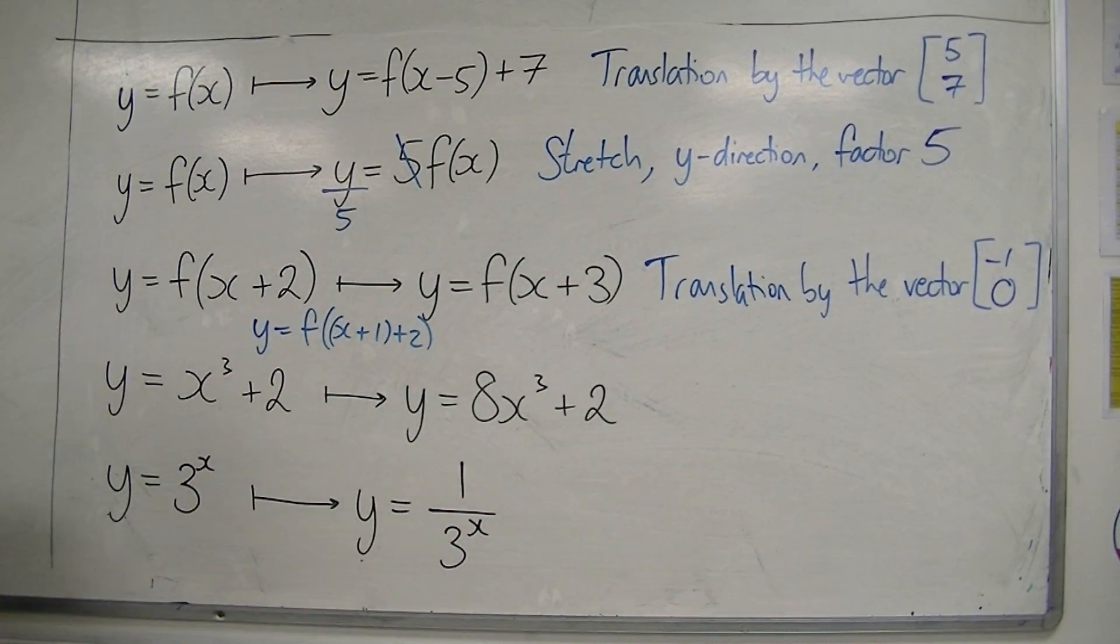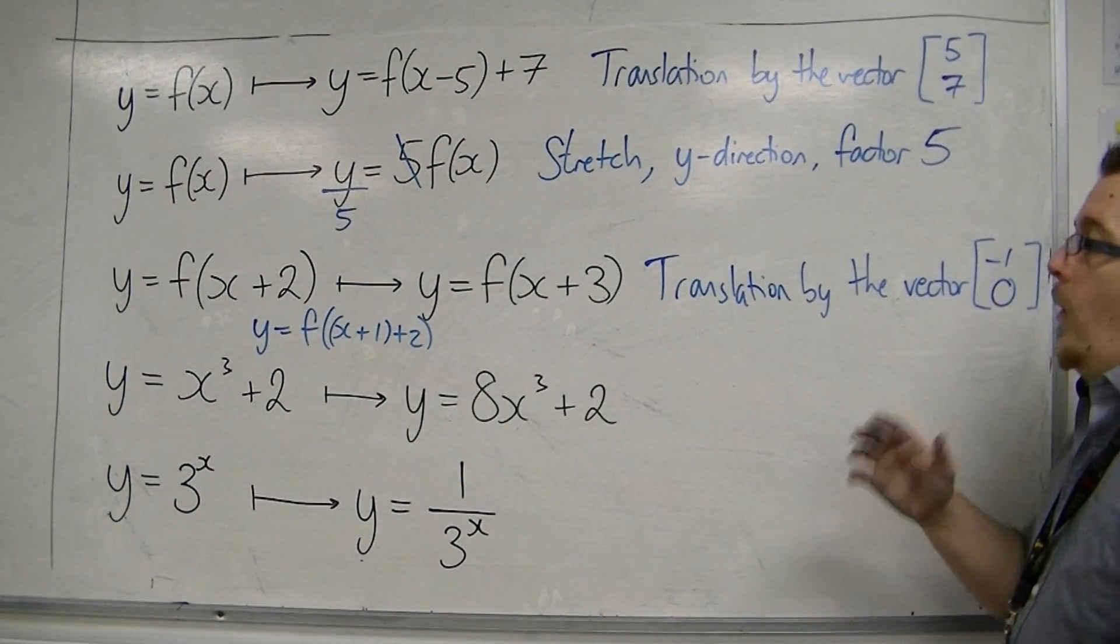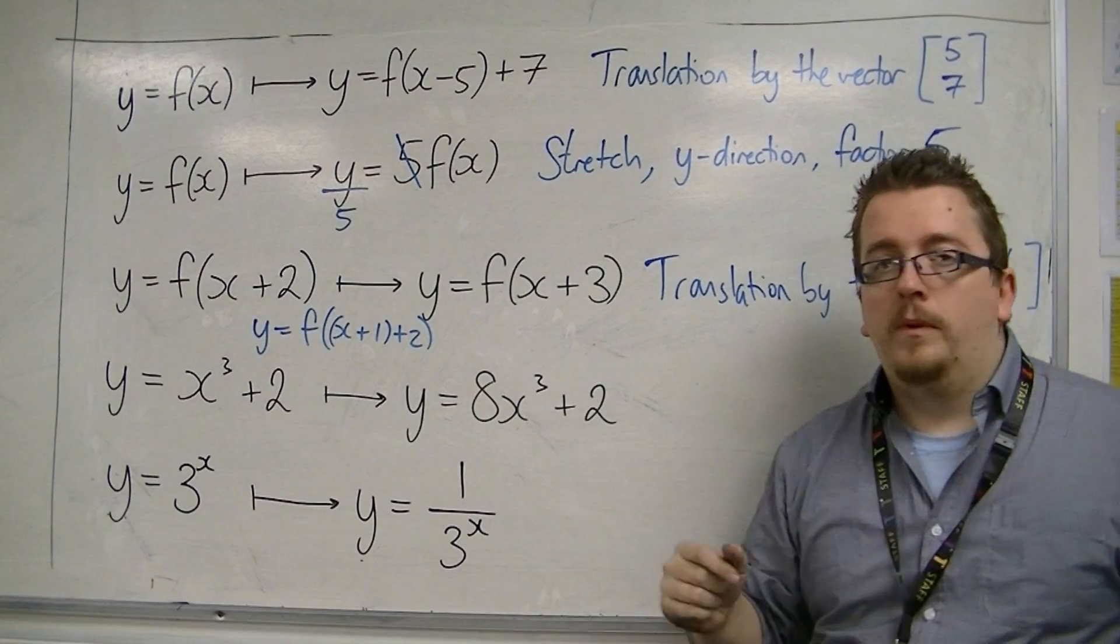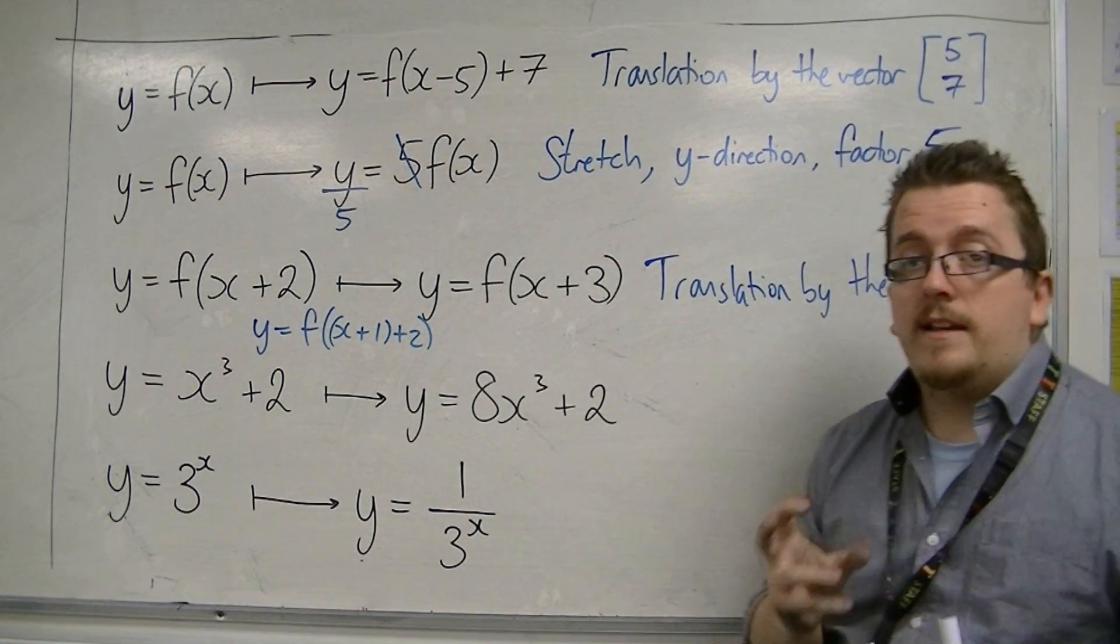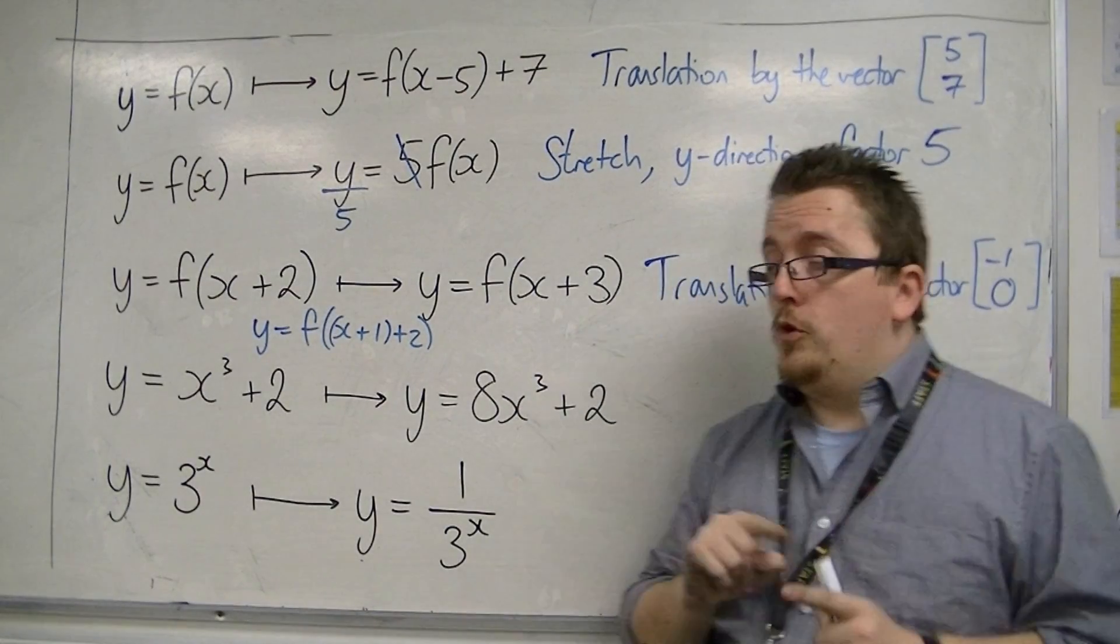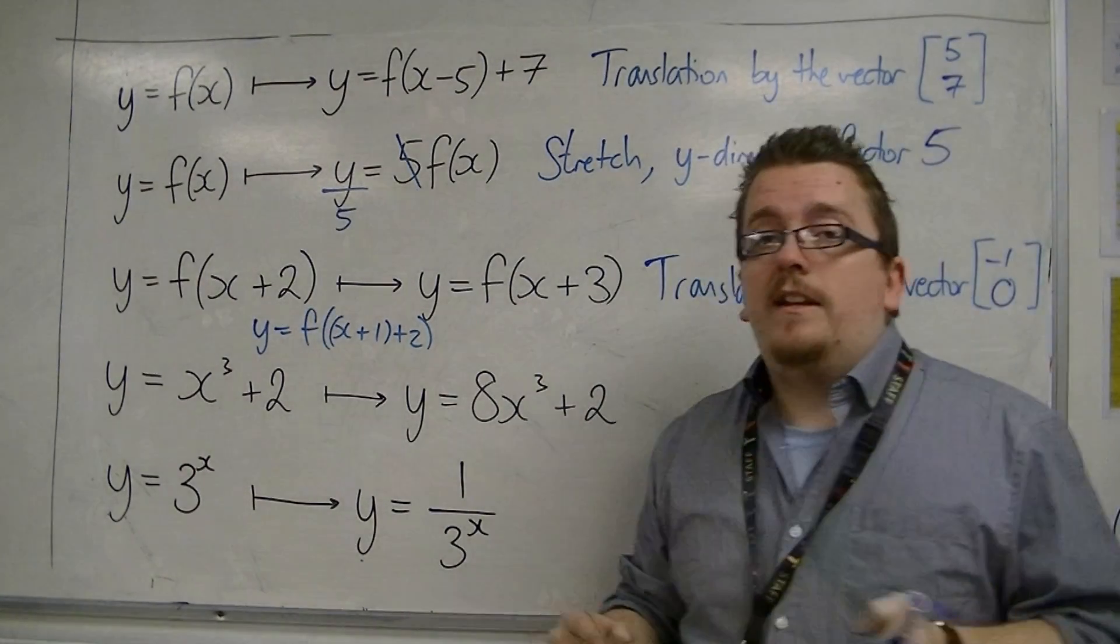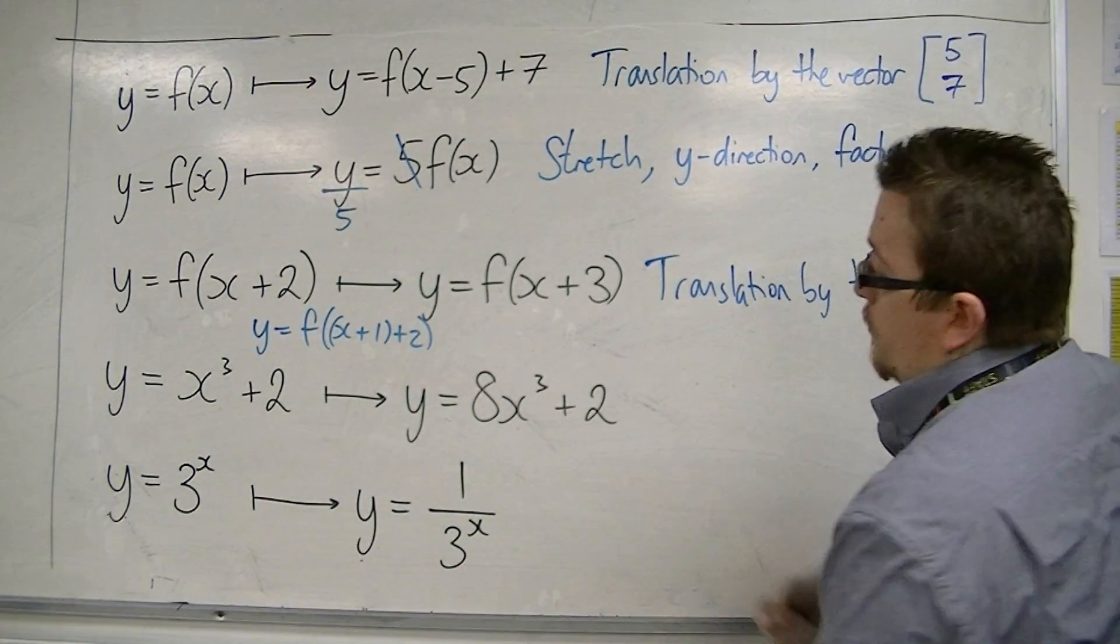Let's look at this next one. We're not looking with function notation anymore. We've got y equals x cubed plus 2 that's been mapped to y equals 8x cubed plus 2. One thing you might want to notice is that the plus 2 has stayed the same, still going through 2 on the y axis. So that means it is unlikely that this was a stretch in the y direction, because that 2 would have been pulled upwards or downwards.